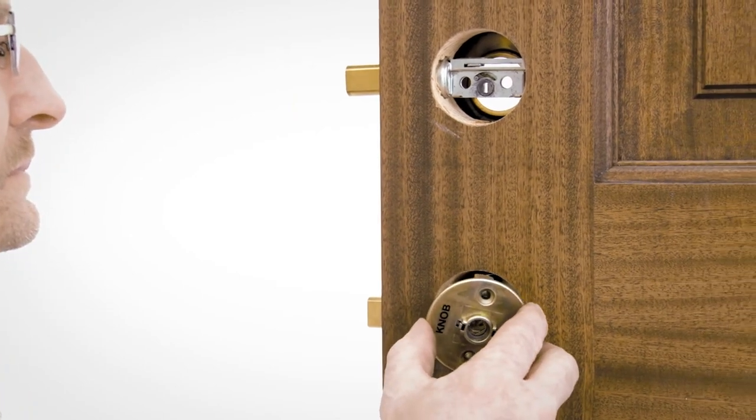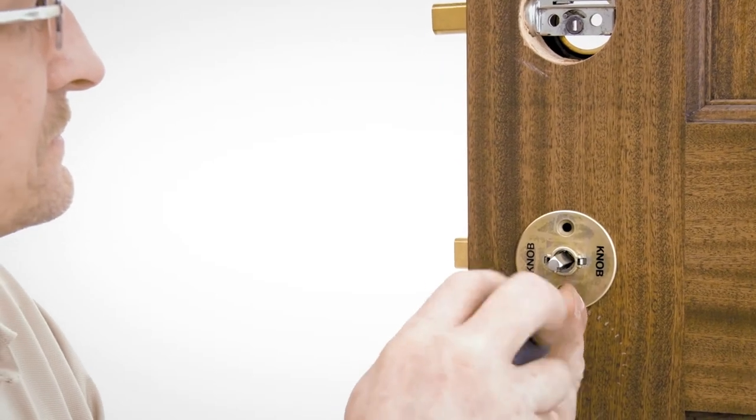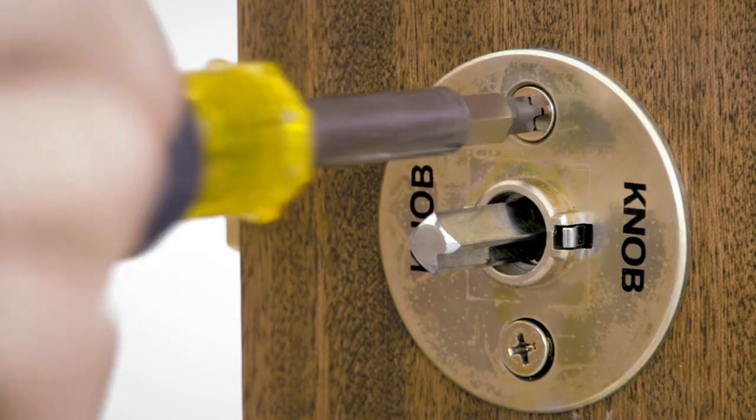Insert the inside adapter onto the posts of the outside handle set. Secure with 2-10-32 by 1-1/4 inch screws. Leave screws loose for adjustment.